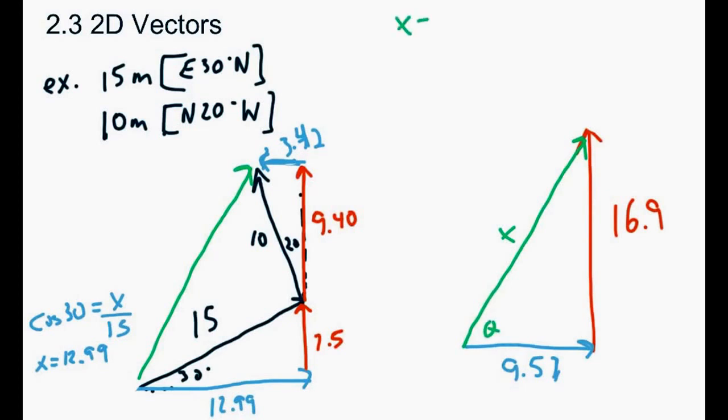So the length is pretty easy. We just use Pythagorean theorem. So 16.9 squared plus 9.57 squared, and square root that answer. That gives us 19.42, and we'll just round it off to 19.4.